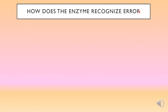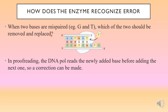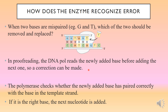How does the enzyme recognize the error? When two bases are mispaired — for example, guanine mispaired with thymine — which of the two should be removed? How does the enzyme recognize whether thymine or guanine is the wrong base? In proofreading, the DNA polymerase reads the newly added base before adding the next one, so a correction can be made. The polymerase checks whether the newly added base has paired correctly with the base in the template strand. If it is the right base, the next nucleotide is added; otherwise the error is corrected.